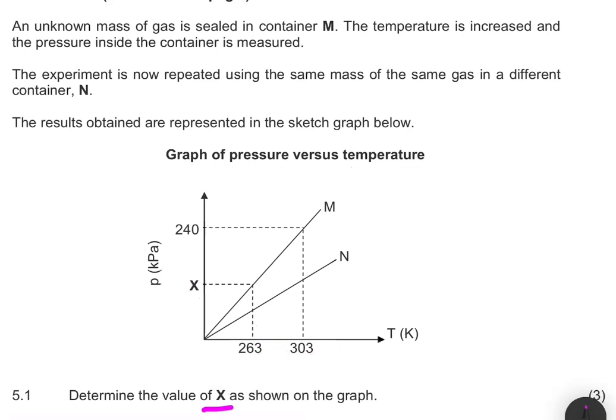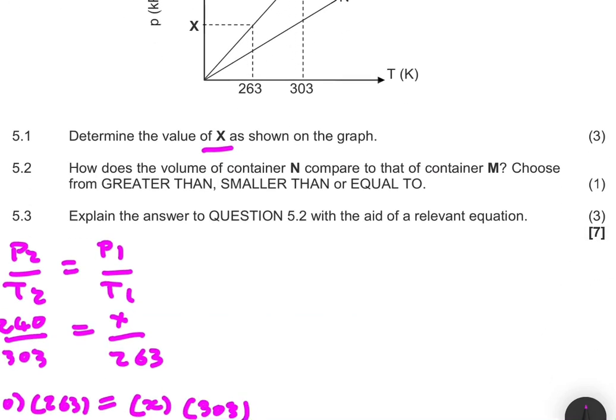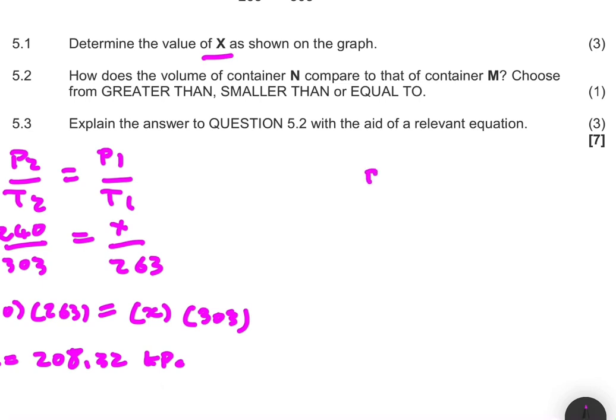Let's go to our graphs. I want you to look at M and N. One thing I want you to realize is that in M and N we have the same mass of the same gas, so we can say that PV equals nRT. If we make pressure the subject of the formula, we're going to get P equals nRT divided by the volume.